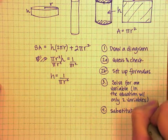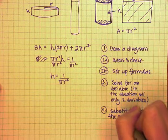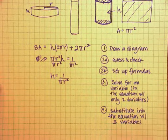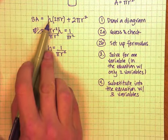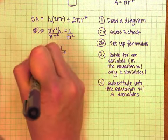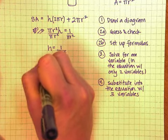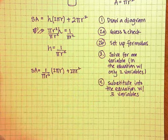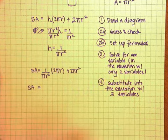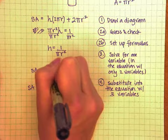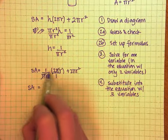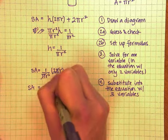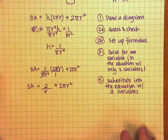So substitute into the equation with 3 variables. So instead of h up here, I'm going to plug in what h is equal to. So I have surface area equals, and instead of h, I'm going to say 1 over πr² times 2πr plus 2πr². And now I can do a little bit of simplification here. So for instance, I have a π on bottom and a π on top, since this is over 1. So those can reduce. 2 times 1 is 2. And I have an r on top and an r² on bottom. So that's going to leave me with an r on bottom. And then plus 2πr².